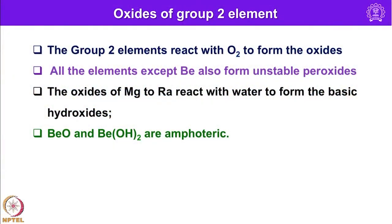Group 2 elements react with oxygen to form oxides. All elements except beryllium also form unstable peroxides. The oxides of magnesium to radium react with water to form basic hydroxides, very similar to alkali metal oxides. Beryllium oxide and beryllium hydroxide are essentially amphoteric in nature.